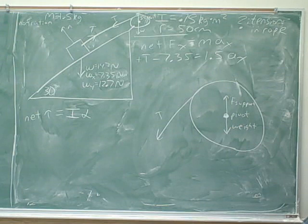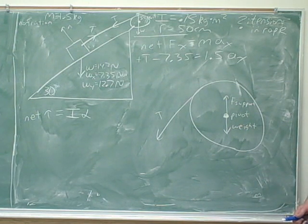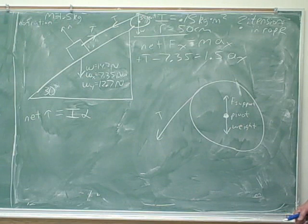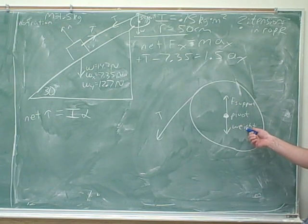And then we can start trying to calculate the torques. Maybe we can start with the torque from the weight. Any idea what the torque from the weight would be here? It wouldn't have one because it's coming from the pivot of rotation. That the R would be zero. Yeah. R would be zero for this guy. That's right. Which means that the torque is zero.